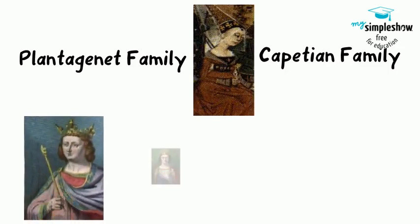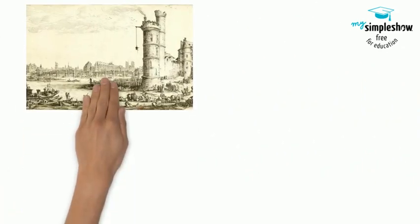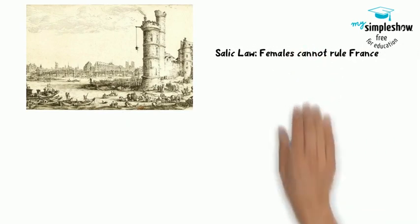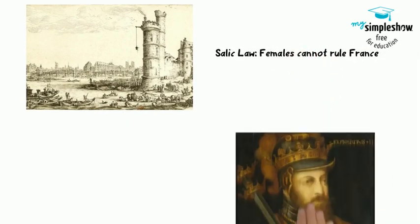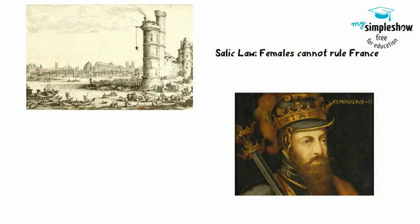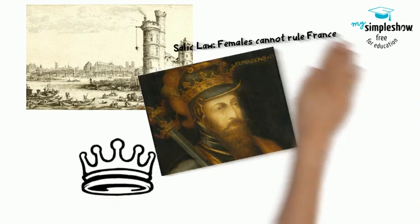Her three brothers all became king, as well as one of their babies, and all died. The Tour de Nestle scandal had left doubts about the other kids, and the French had passed the Salic law, which forbid women to rule, so the next in line would be Isabel's son Edward III, who would be king of England and France.